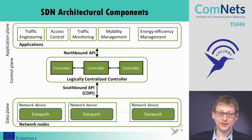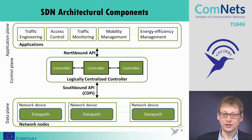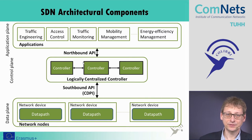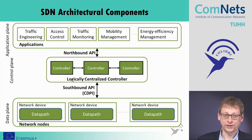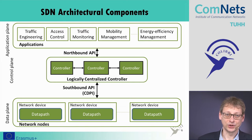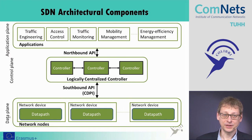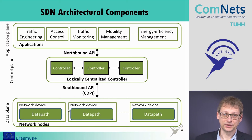Looking in more detail: at the top we have applications such as traffic engineering, access control, traffic monitoring, mobility management, and energy efficiency management. We can think about how to configure the network to be as energy efficient as possible. Then we have the northbound interface to the logically centralized controller — it's only logically centralized and can be decentralized for security and scalability reasons. The network controller has a more or less complete view of the network and decides how to handle different traffic flows, packets, and routing. Then we have the southbound interface leading to the data plane and forwarding, where each network device is controlled by the centralized control plane.